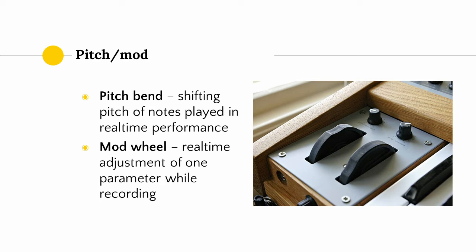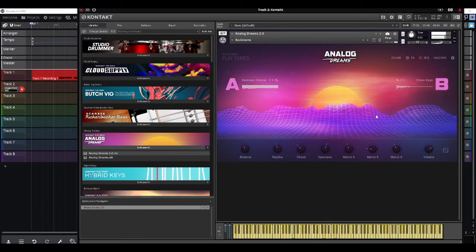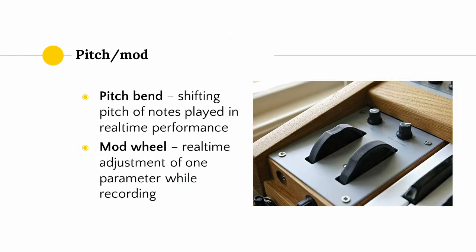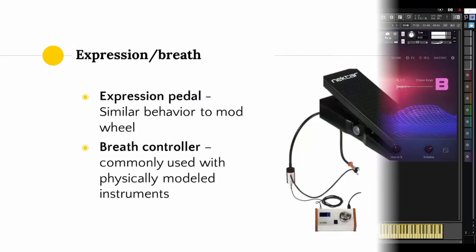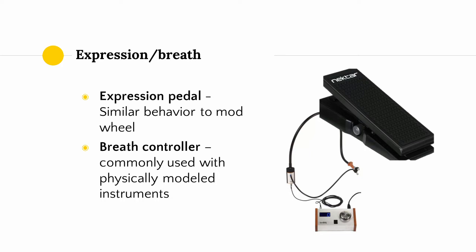Pitch bend wheel messages are messages emitted by the pitch bend wheel on a MIDI keyboard, which acts as an easy way for a musician to shift the pitch of what is being played. Modulation wheel messages are sent by a MIDI keyboard via a modulation wheel, allowing a musician to easily manipulate one parameter of an instrument while recording. Expression pedal messages serve a similar purpose for expression pedals that can be hooked up to some synths and keyboards. Breath control messages are emitted by breath controllers, which are expensive, but can be hooked up to MIDI interfaces or keyboards, allowing the musician to control a MIDI parameter in real time with their breath.